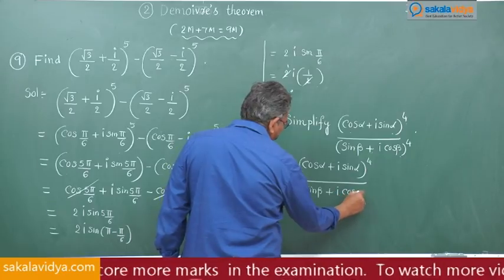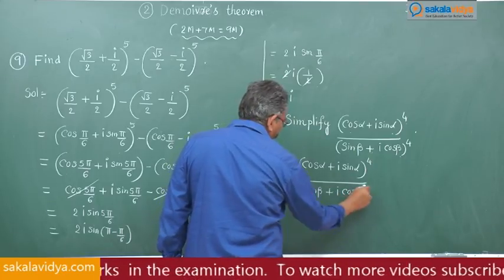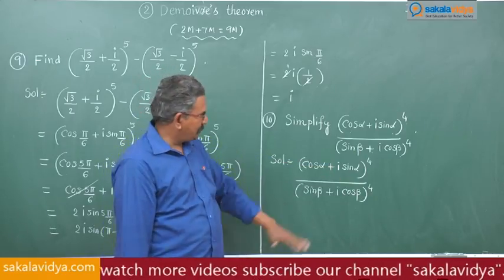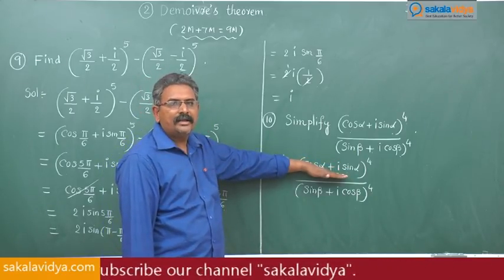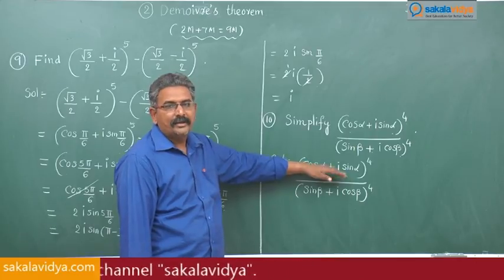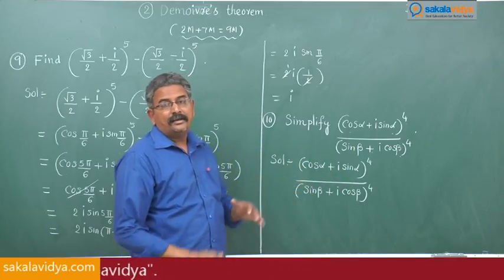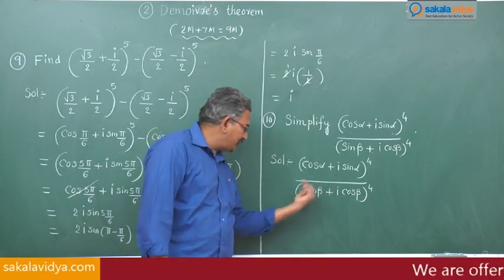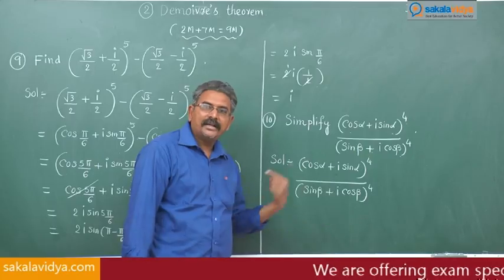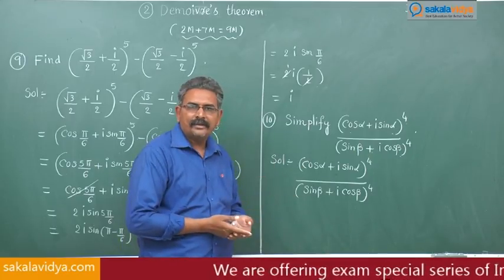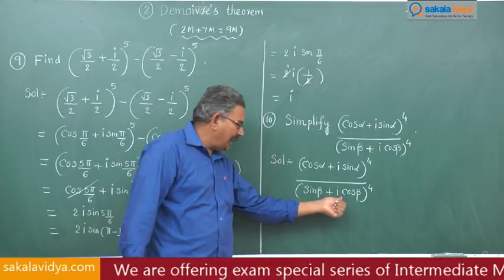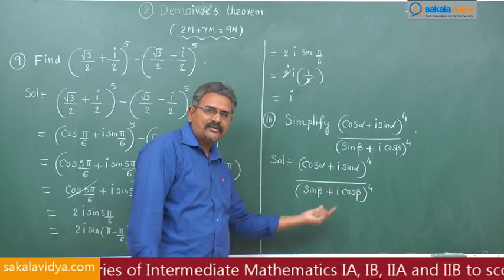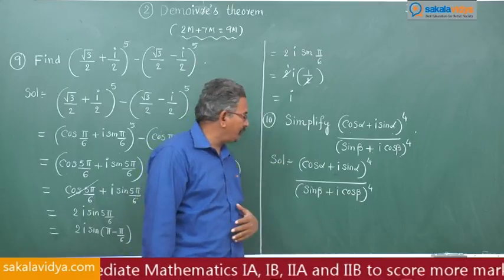Observing the problem: for the numerator we can directly apply De Moivre's theorem. But can we apply it directly to the denominator? No, because it is not in the form (cos θ + i sin θ)^n. That is why i has to be taken as a common factor first — some simple manipulation must be done.